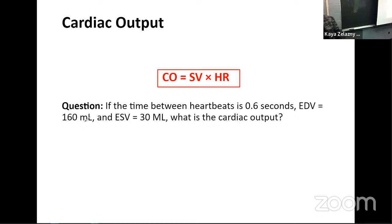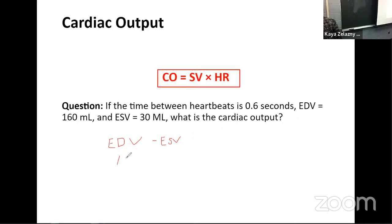So which two things are we going to be looking at to find the stroke volume? How are we going to set that up in our equation — add them, subtract them, divide them? Exactly — we're going to do EDV minus ESV. So looking at those numbers: 160 minus 30 gives us 130. So that's our stroke volume. The cardiac output equals stroke volume times heart rate.